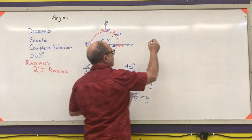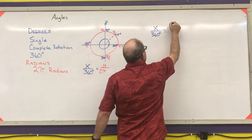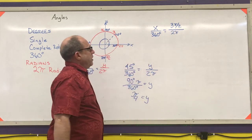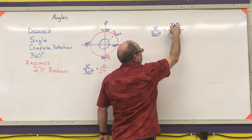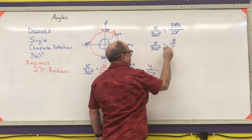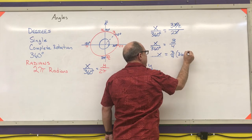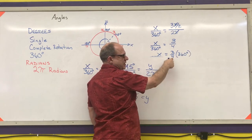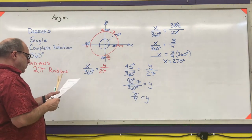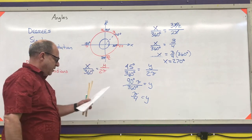Let's do it the other way around — this is example 1.6. If I have x over 360 degrees and I want to know what 3π/2 radians is in degrees: the π's cancel, and that's 3/2 divided by 2 which is 3/4. Multiply both sides by 360 — a quarter of 360 is 90, times 3 is 270 — so 3π/2 radians equals 270 degrees, which confirms what we already had.